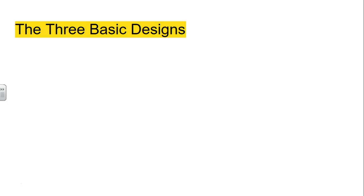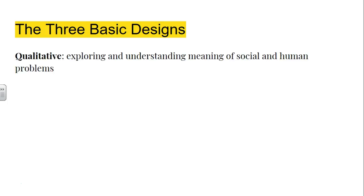A couple of definitions you need to understand to start off — the three basic types of research, or research design. The first one is qualitative. Qualitative research design is when you explore and understand the meaning of social and human problems, problems that individuals develop together.